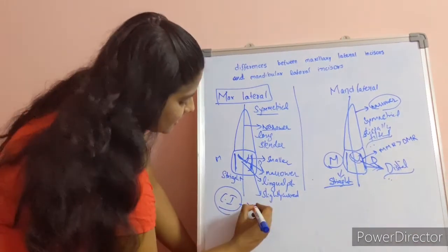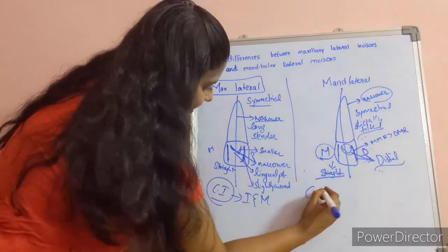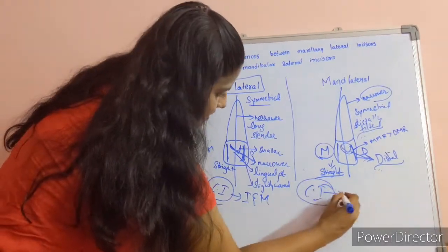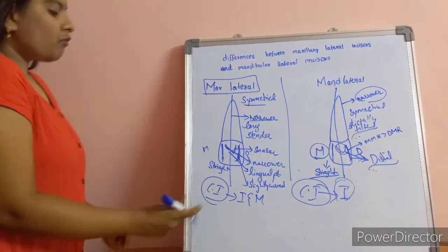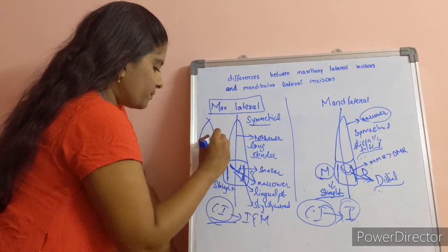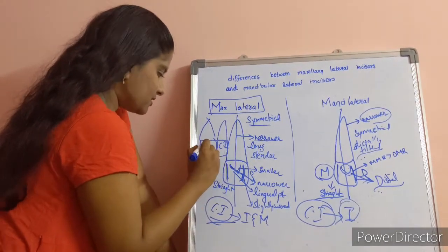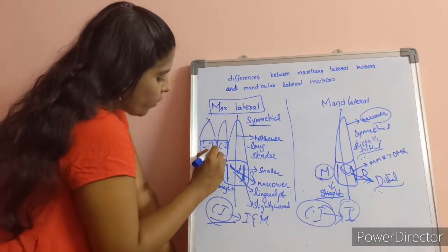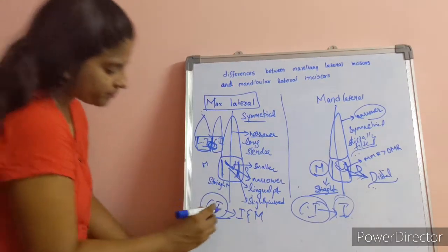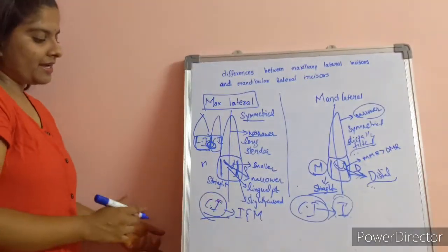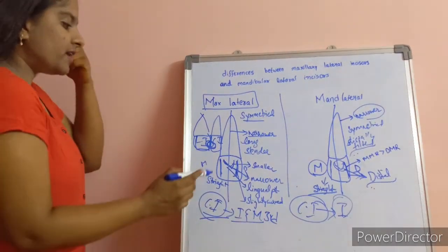The contact area of the maxillary lateral incisor is between the incisor third and the middle third. The contact area of the mandibular lateral incisor is at the incisor third — placed more incisally. The contact area is where two teeth meet; for example, where the central incisor and lateral incisor come into contact.